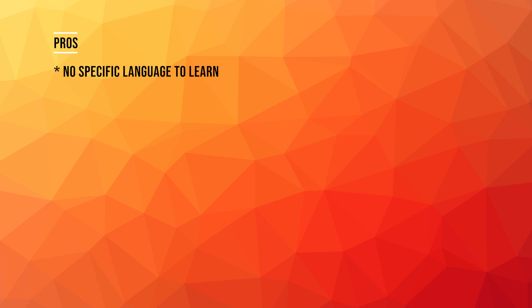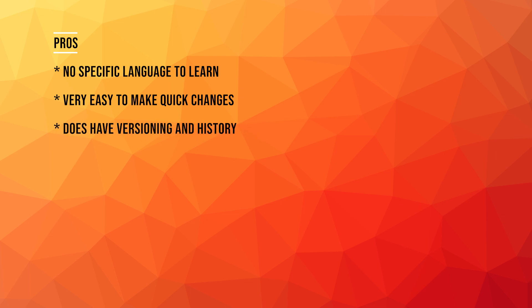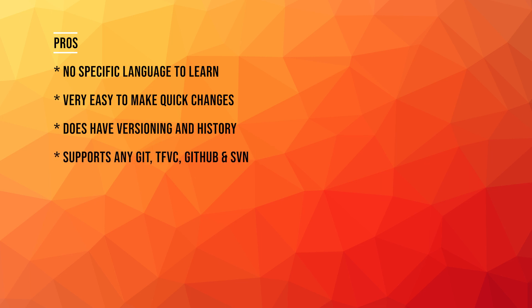Let's look at the pros and cons of the classic pipelines. Starting with the pros: first, there is no DSL — domain-specific language — that you have to learn, which enables super fast onboarding. It is also very easy to make quick changes with just a few clicks, encouraging experimentation. Classic pipelines do have versioning, so you can revert to a previous version easily. Lastly, they support a greater variety of source control: Azure Repos, Git, TFVC, GitHub, any external Git provider, and SVN.